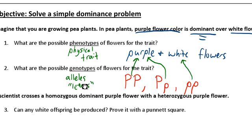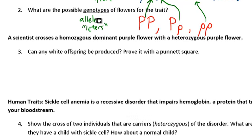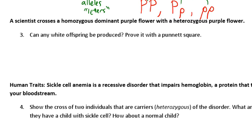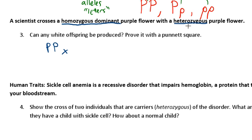Now we know genotypes and phenotypes, let's look at number three. It says a scientist crosses a homozygous dominant purple flower with a heterozygous purple flower. We underline our parents — crossing homozygous dominant purple and heterozygous. Homozygous dominant is two capital letters that are the same, so one parent is big P, big P, crossed with the heterozygous purple, which is always one big, one little. Now you have your two parents and can do your Punnett square from that.